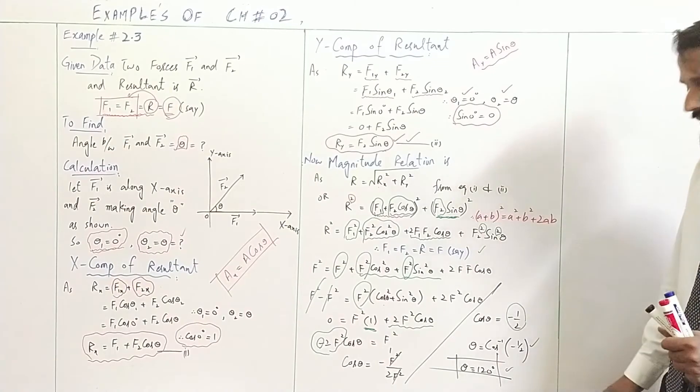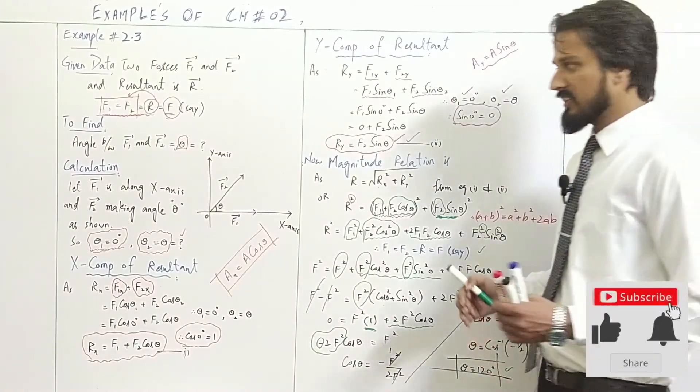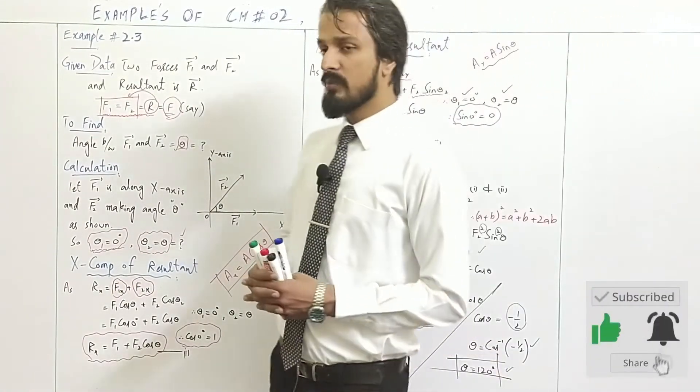The result is theta equals 120 degrees. Okay students, this was our example, that is the angle between F1 and F2.